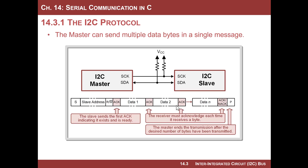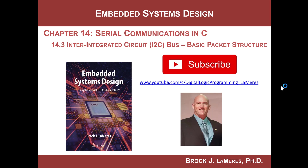There are many situations where you transfer multiple bytes of information in a single message. For example, when writing N bytes to a slave, the master sends start, slave address, read/write — the slave acknowledges — and then the master starts pumping bytes of data. After each byte, the receiver acknowledges. The master sends data 1, receiver acknowledges, master sends data 2, receiver acknowledges, and keeps sending until done. Then the master generates the stop bit. That is the basic packet structure of an I2C message.